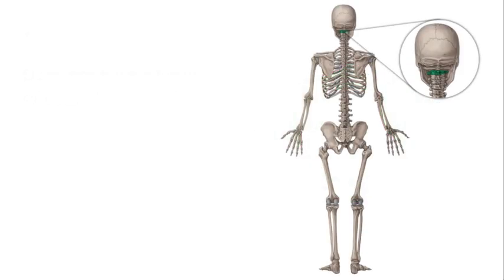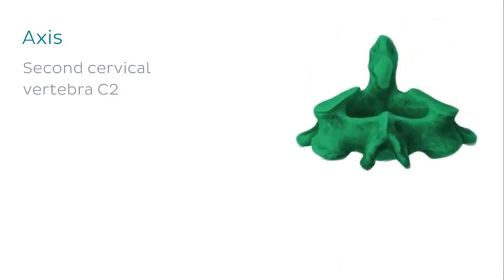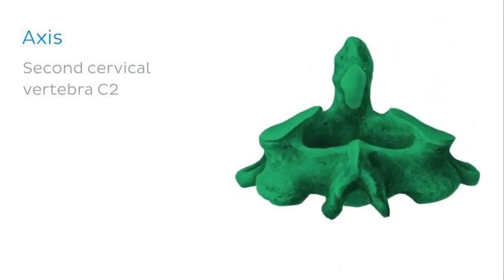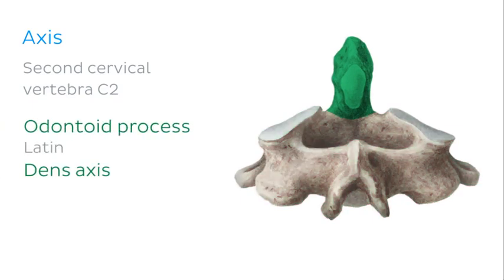The atlas balances on and articulates with the axis, which is the second cervical vertebra, C2. The axis is unique because it has an odontoid process, also known as the dens, and this is the part that articulates with the atlas.